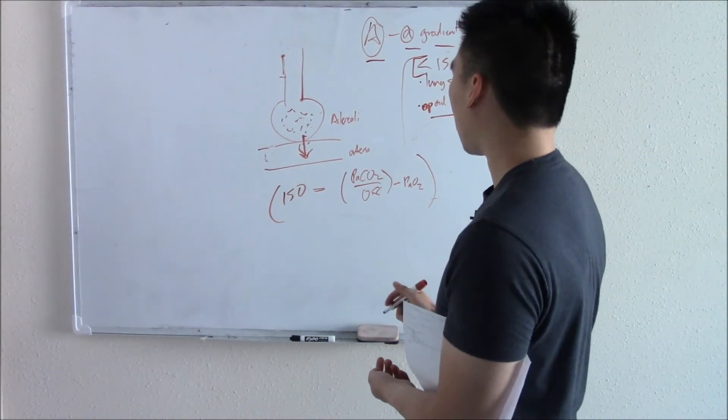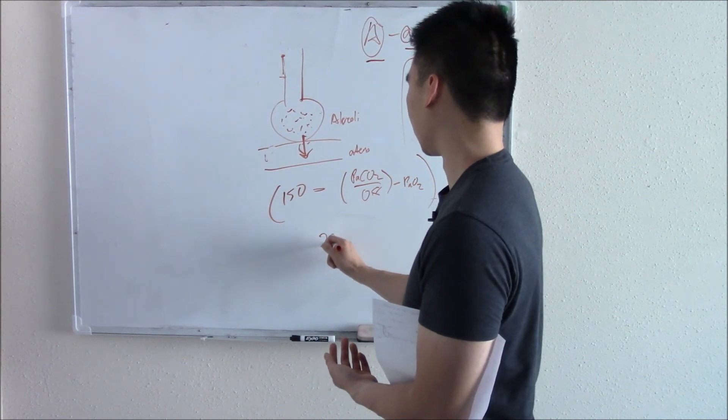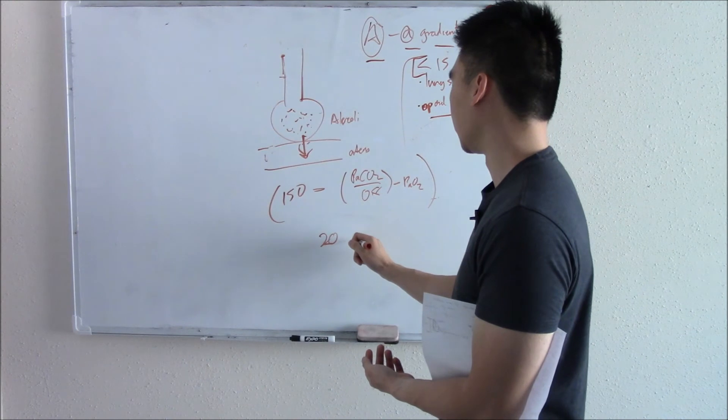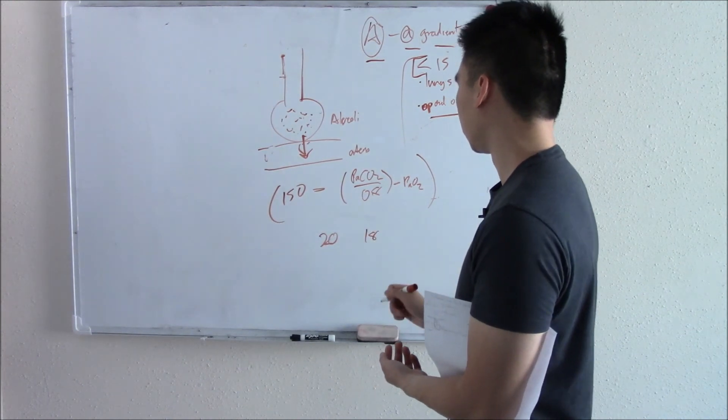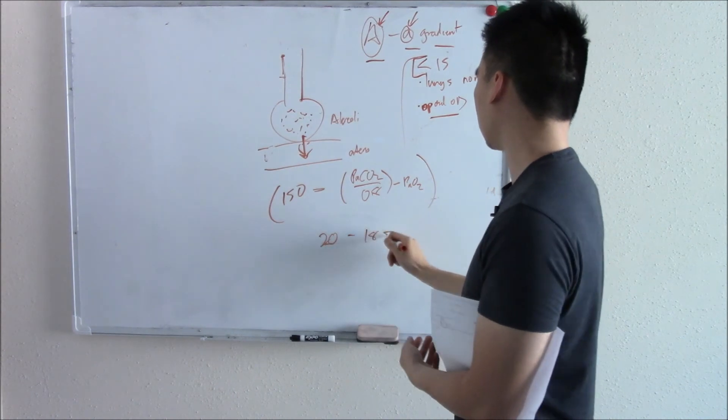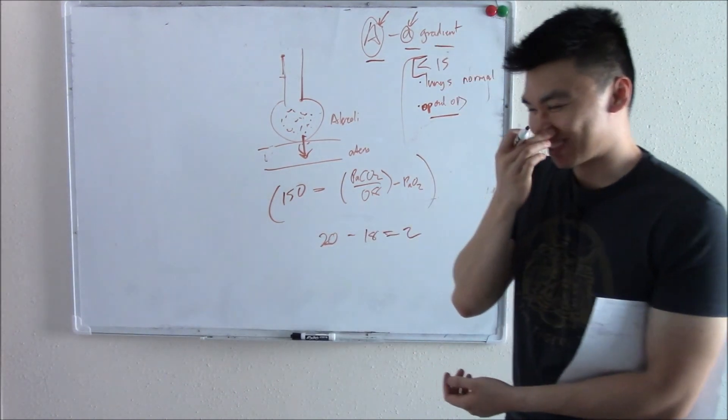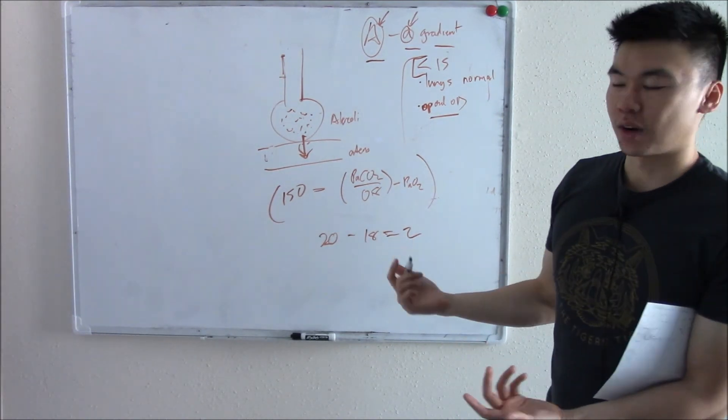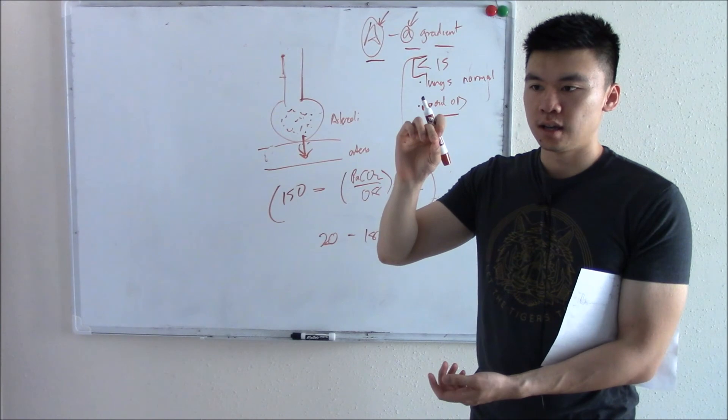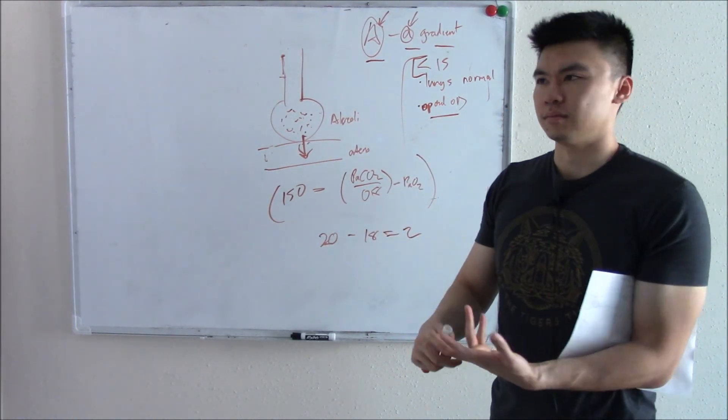Sometimes it'll be nice and just give you the AA gradient. They might say that the oxygen content in the alveoli is like 20, and the oxygen content of the artery is 18. So they give you these units. All you have to do is subtract them and that equals two. Is that less than 15? Yeah. So then you'll look down on the answer choice and look for something that causes hypoxia that doesn't affect the lungs, like opioid overdose, obesity, stuff like that.